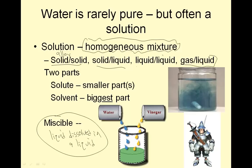Gases can dissolve in a liquid, and pretty much anything can dissolve — that's what we're trying to get at. There are two parts: the solute is the smaller part, or smaller parts, and the solvent is the biggest part. So if I have sugar, Kool-Aid powder, and water, I have two solutes and one solvent, and the solution will be all of those together.